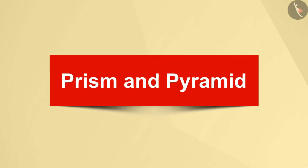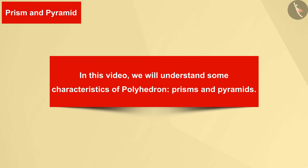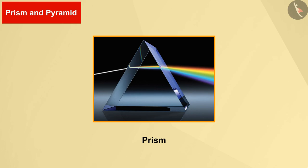Welcome all of you to this video. We have understood the polyhedron and its properties in our previous video. In this video we will understand some characteristics of polyhedron, prisms and pyramids. Most people think of a prism as looking something like this, but they do not know the exact definition of this.